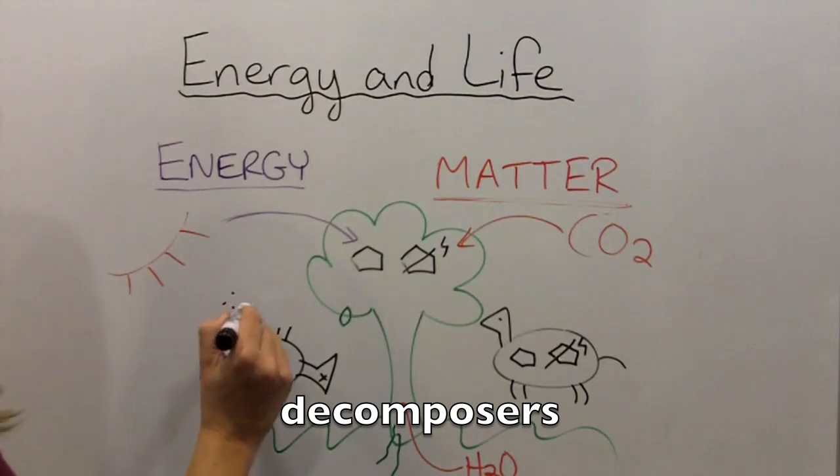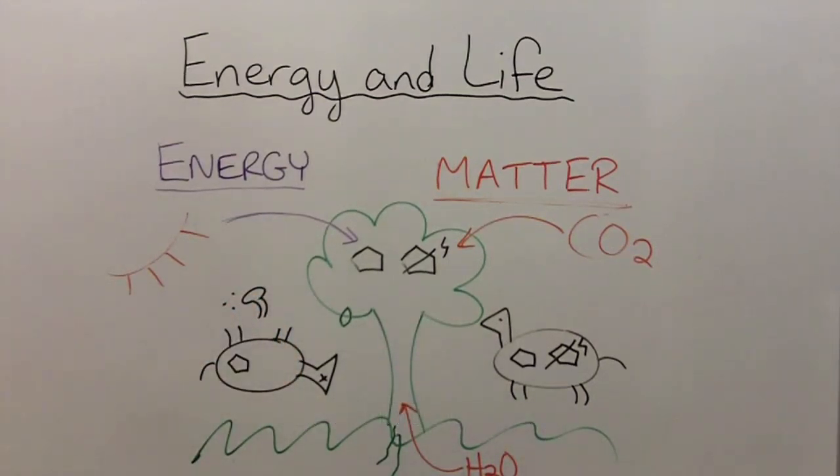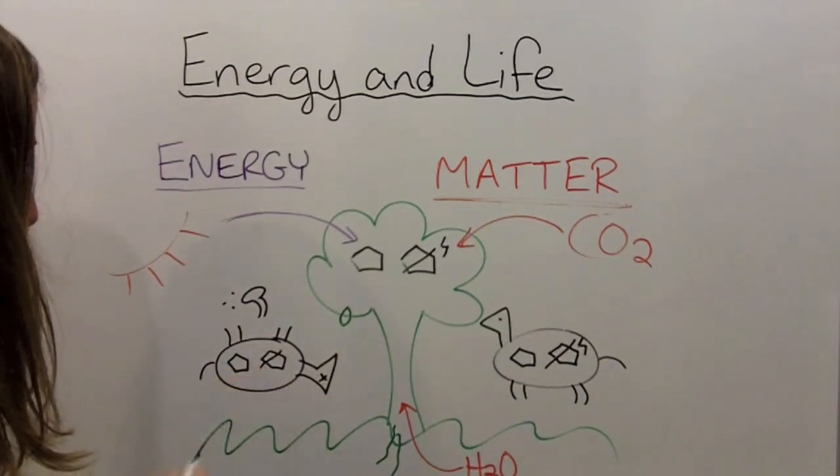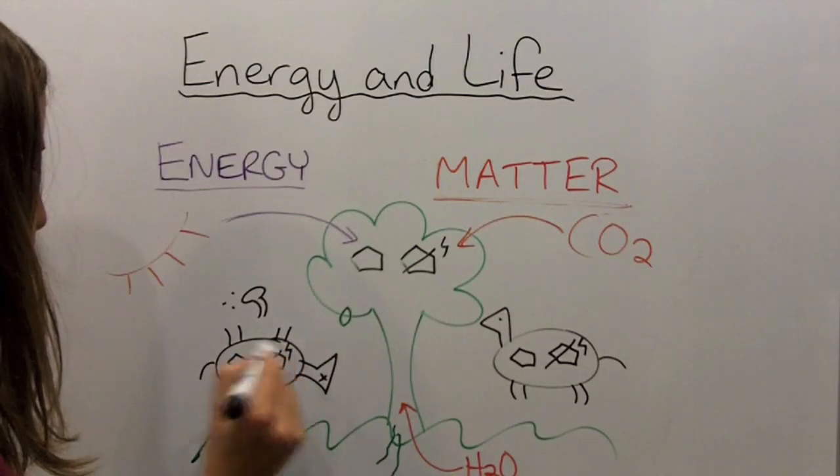Decomposers, such as bacteria and fungi, break down dead things to get their molecules. And just like plants and animals, the decomposers can use the molecules from the dead things to build their own structures, or break down the molecules, usually through the process of respiration, in order to get the energy that is stored inside.